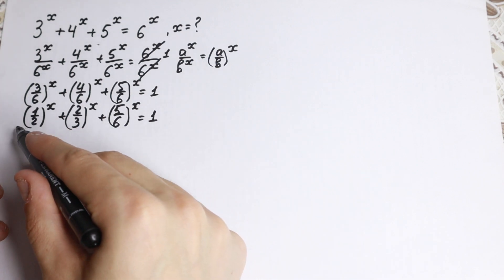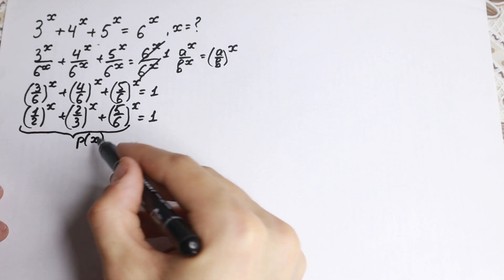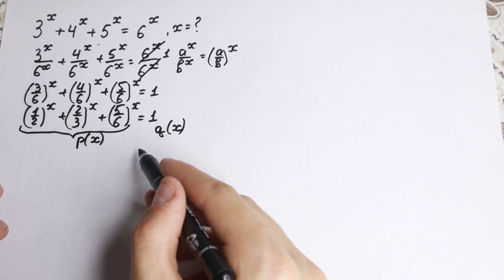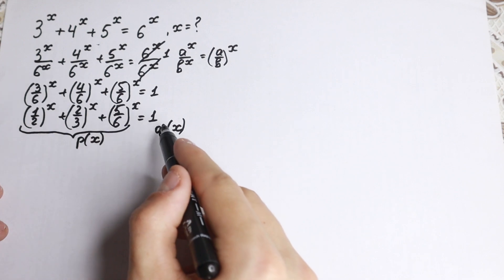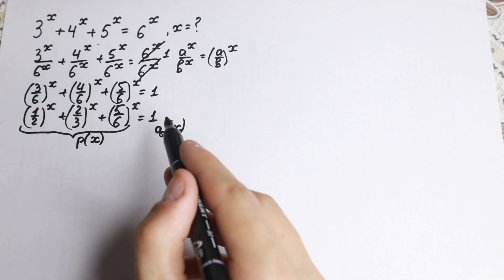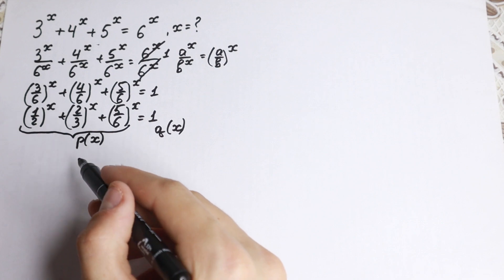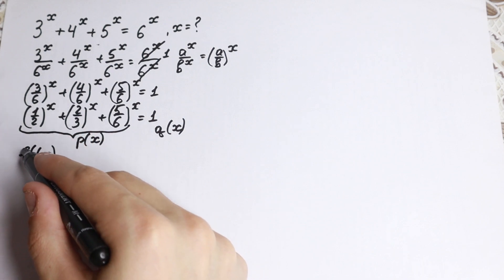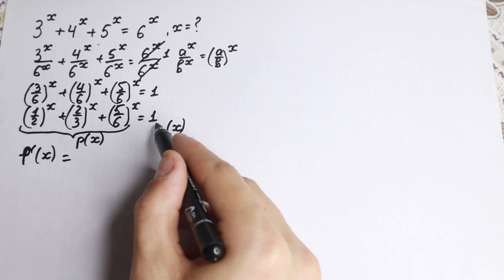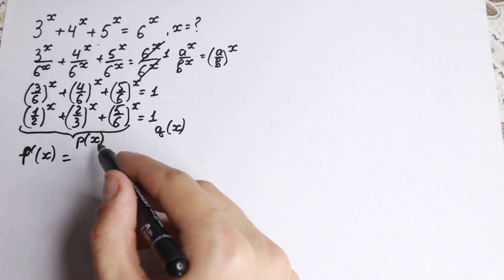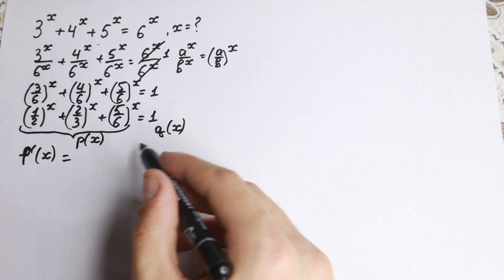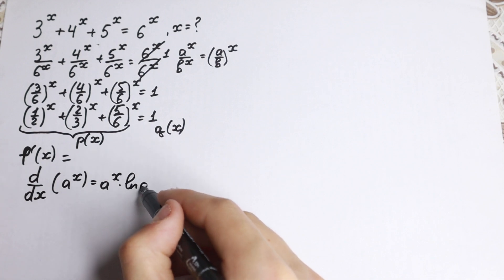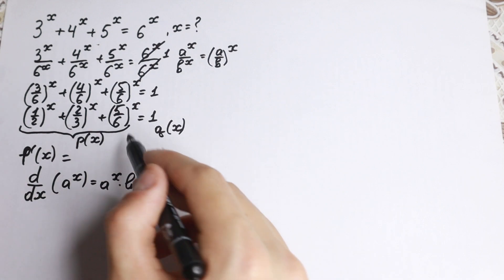Take a look closely. Let's call this left-hand side function p(x), and the right-hand side q(x). Let's get some information about these functions. We'll use the derivative method. If we find the derivative of the left-hand side, we can discover the behavior of this function. The formula is: d over dx of a to the power x equals a to the power x times natural log a.